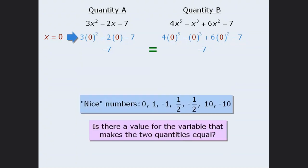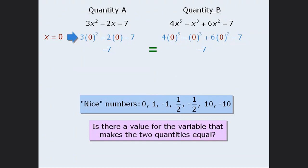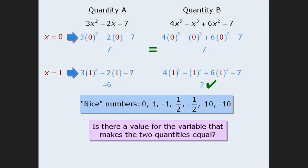So what number should we plug in next? Well, if we plug in 1, we get the following, and when we evaluate each quantity, we get negative 6 and 2, in which case quantity B is greater than quantity A. So since we get two conflicting results here, the answer must be D — the relationship cannot be determined from the given information.